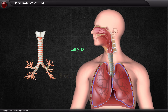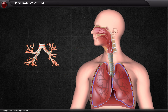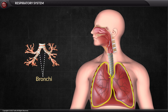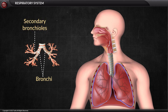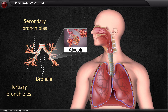The next structure is the bronchus, which is divided into two bronchi, each leading into one of the lungs. The bronchi are divided into secondary and tertiary bronchioles, which further branch out into small air sacs called the alveoli.